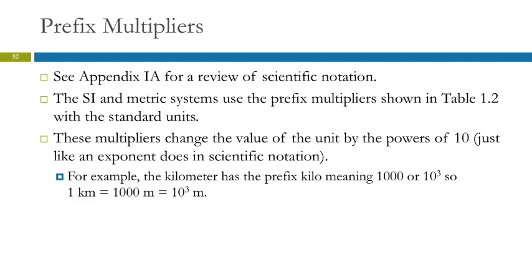Talking about the metric system: it uses prefixes to change the size of the unit. It's important to have units of different sizes — if our only unit of length were an inch, measuring the distance from Fresno to San Francisco in inches would be ridiculous. In the English system, conversion factors are kind of random — 5,280 feet in a mile? In the metric system, everything's based on powers of 10, and the prefixes mean the same thing for all kinds of units. Once you learn the system, you can do anything.